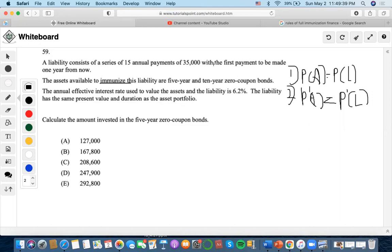For this one, it says a liability consists of 15 annual payments of $35,000. We'll do $35,000 payments, 15 number of years, 6.2%. That means that both assets and liabilities must equal this amount, $335,530.30.